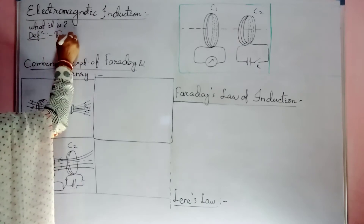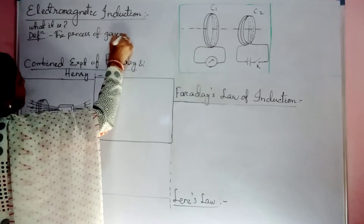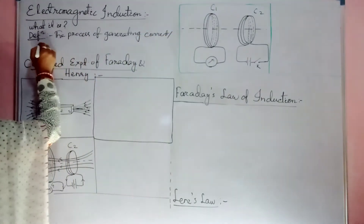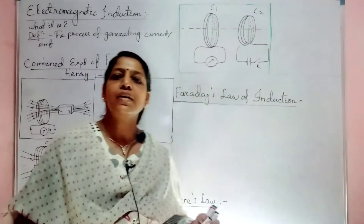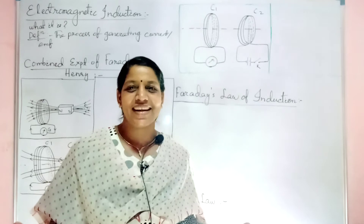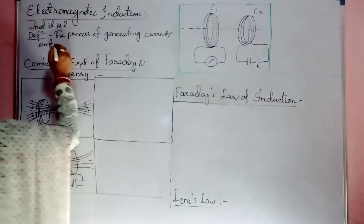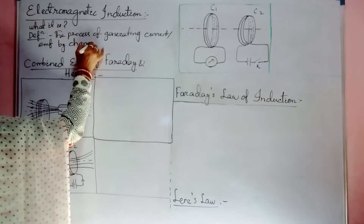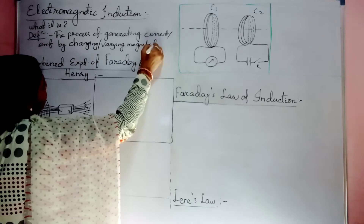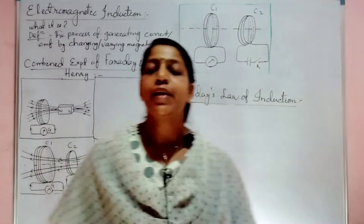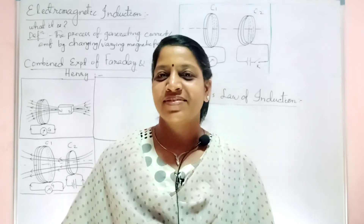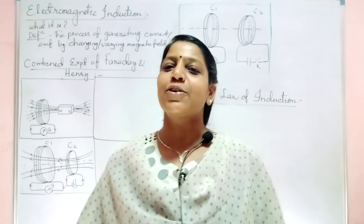So the process of generating current — or EMF, which stands for electromotive force — by changing or varying the magnetic field, or by changing or varying the magnetic flux, is nothing but electromagnetic induction. Change the magnetic field, and there will be generation of current. That is called electromagnetic induction.